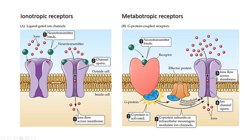That second messenger will bind to some ion channel, and upon binding, the ion channel may open. When the channel opens, it will allow the movement of an ion or a group of ions across the membrane through the channel. Depending upon the particular ion or ions, it will lead to a change in the excitability of the postsynaptic membrane, as we have discussed in the case of ionotropic receptors.